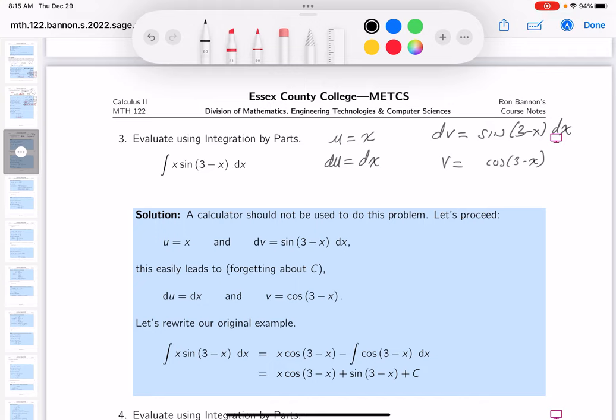I'm ready to write it down. And what I write down over here—well, I write down, let's see, uv. So it's going to be x cosine 3 minus x minus—